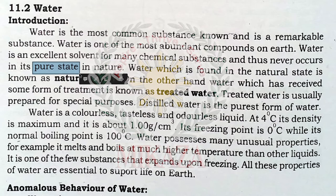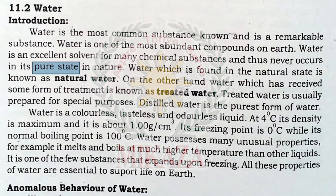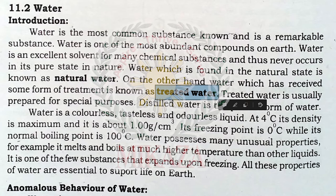Pure fresh water found naturally in the world is very limited. Most water found on earth is mixed in a solution. Water found in its natural state is known as natural water, while water that has received some form of treatment is known as treated water. Treated water is usually prepared for special purposes.